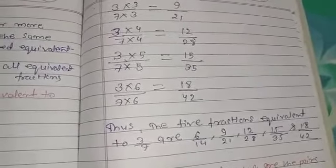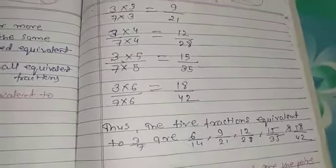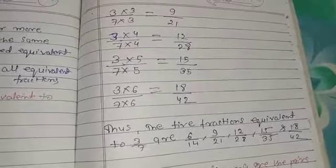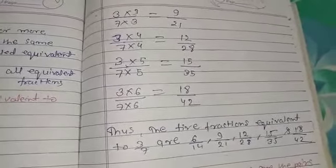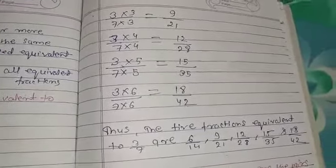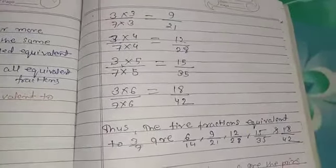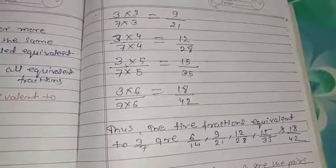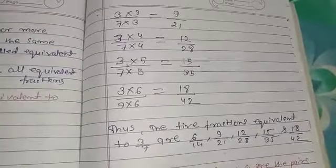If you want to find equivalent fractions of any fraction, simply multiply both the numerator and denominator by 3, 4, 5, 6, 7, and so on. This is the method to find equivalent fractions.